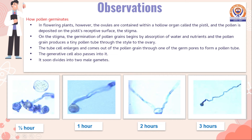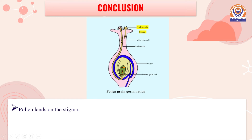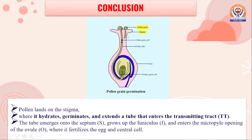These are some observations from the slides. After half an hour, a pollen tube comes out of the pollen grains through one of the germ pores. After one hour, a pollen tube can be observed; after two hours, a longer pollen tube; and after three hours, a prolonged pollen tube can be observed. In conclusion, pollen lands on the stigma where it hydrates, germinates, and extends a tube that enters the transmitting tract. The tube emerges into the septum and enters the micropyle opening of the ovule where it fertilizes with the egg and the central cell.